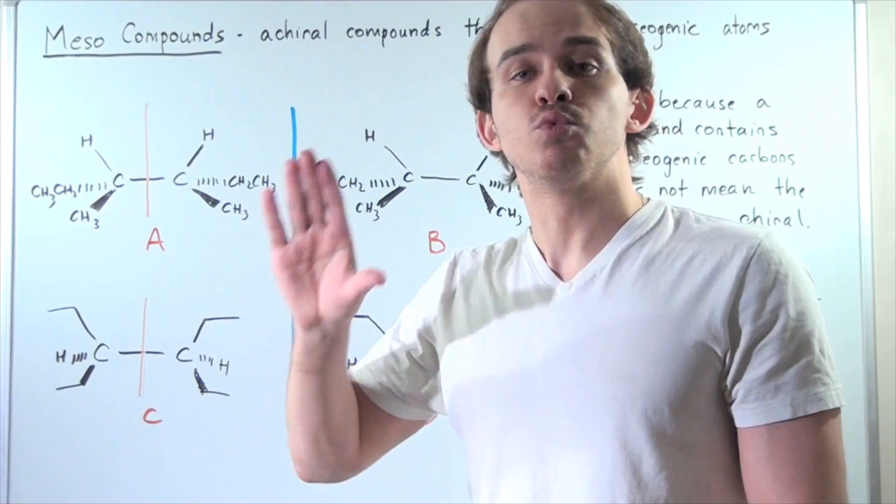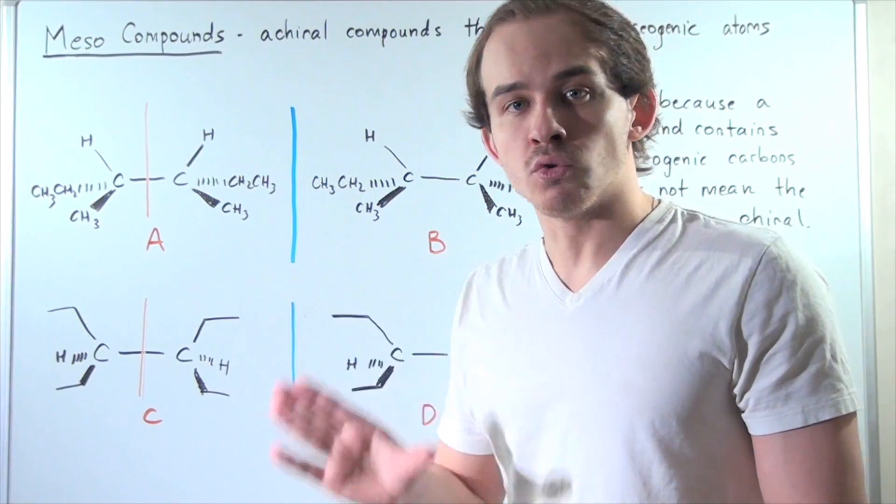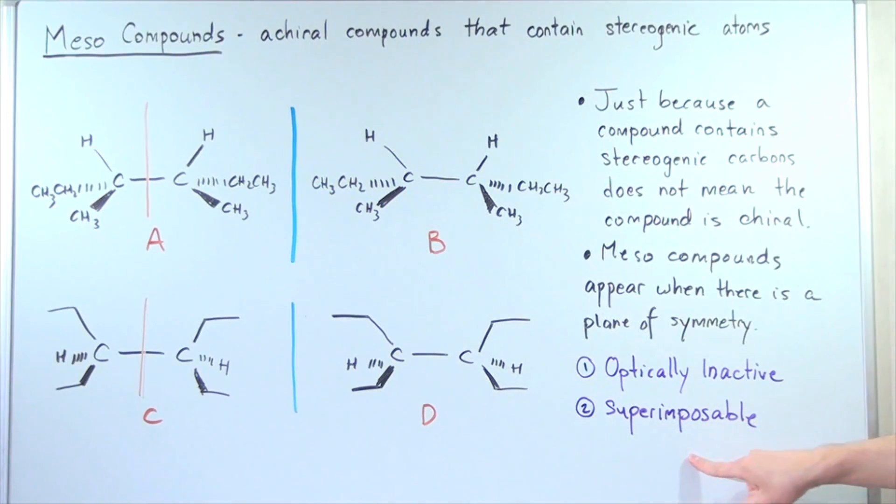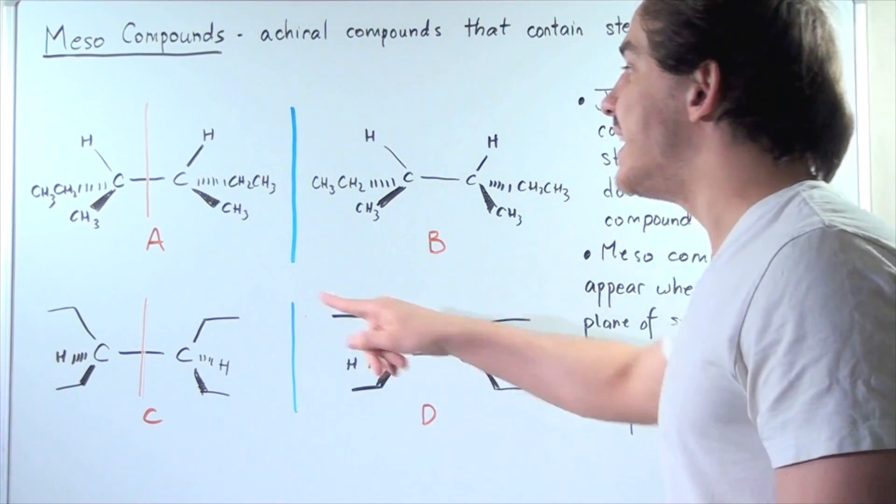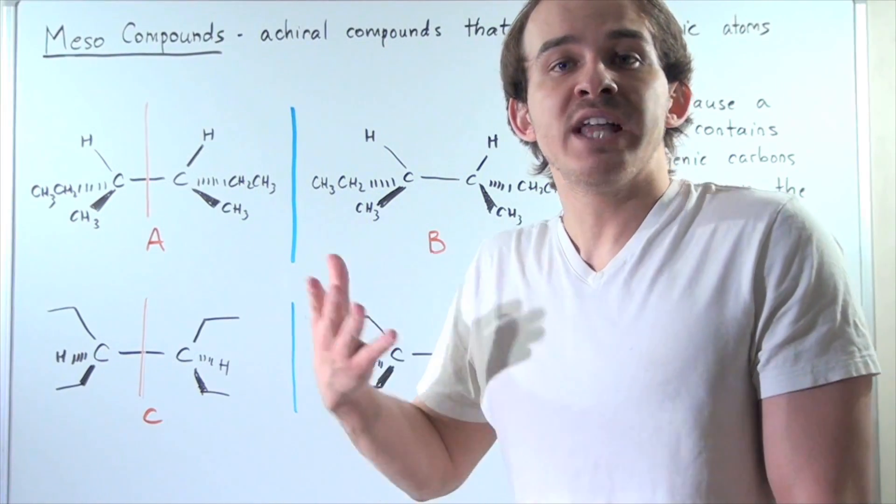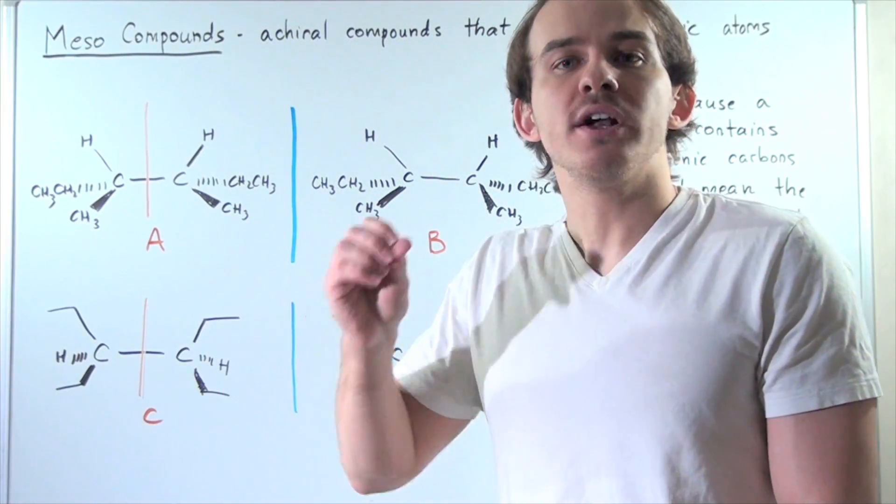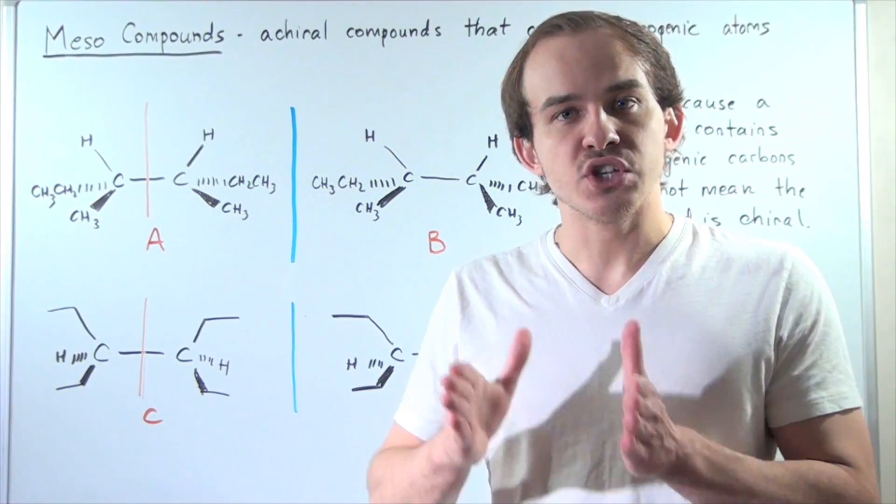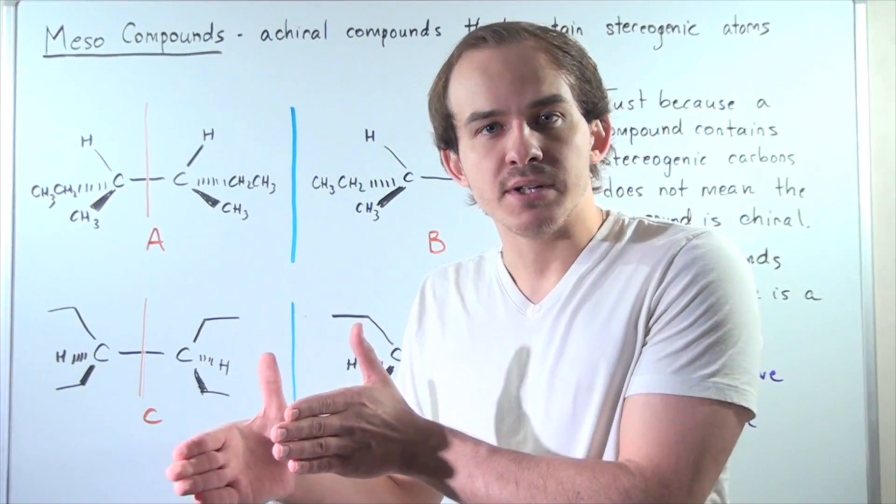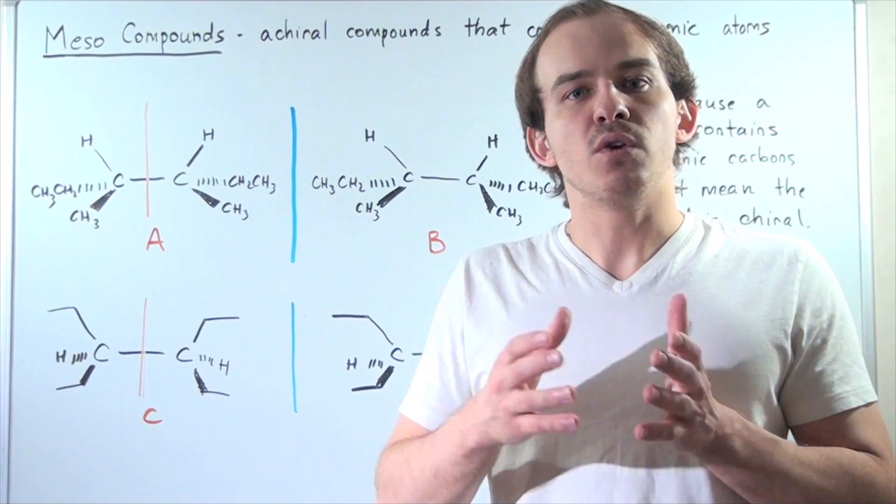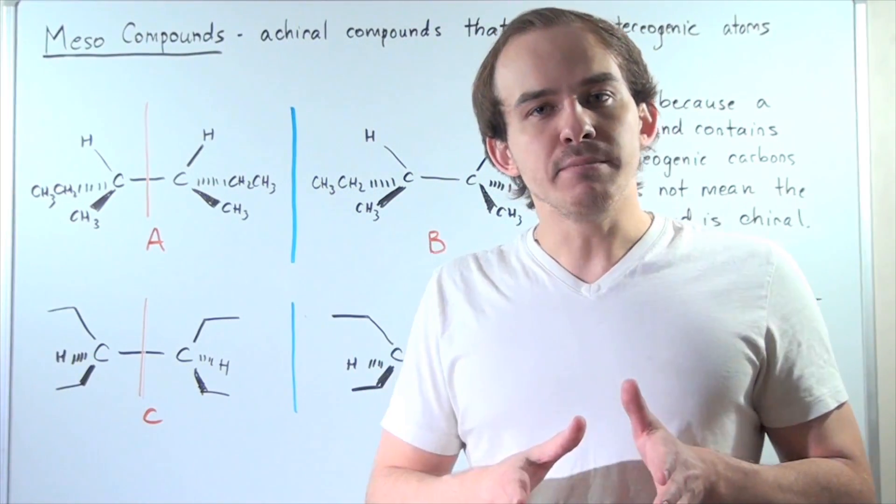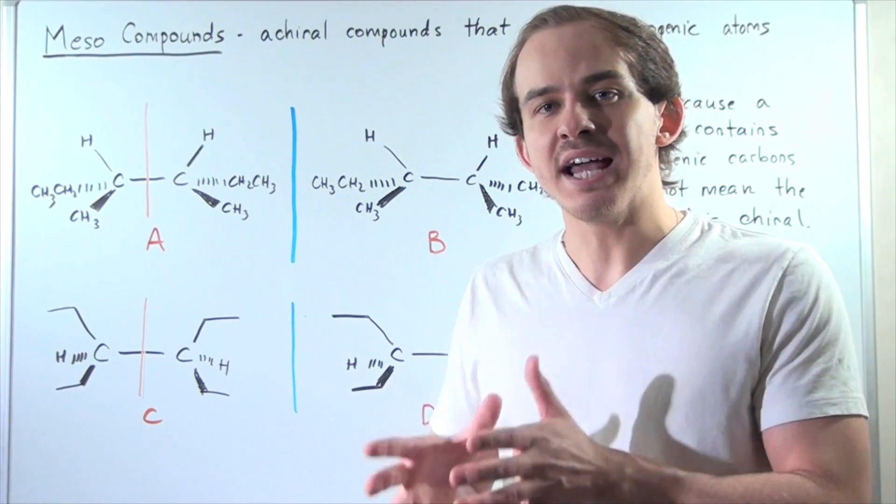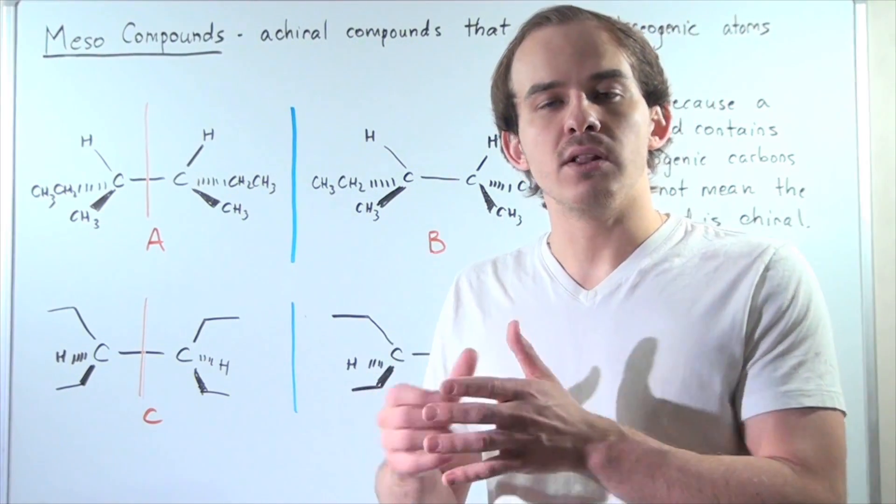And mesocompounds are superimposable. In other words, they don't have enantiomers. They don't have mirror images that are not superimposable. So once again, mesocompounds are compounds that have stereogenic carbons but do not have mirror images. So they're achiral. And that means they're optically inactive. They will not rotate plane polarized light the same way that chiral molecules will.